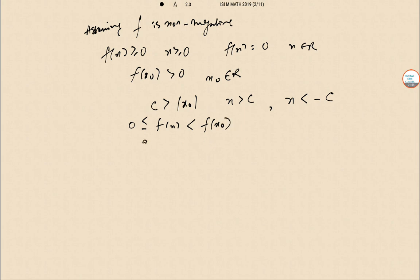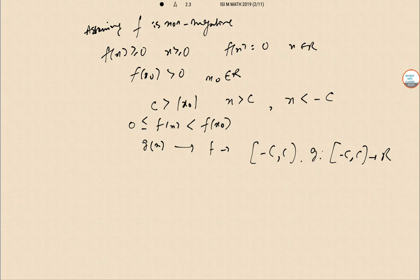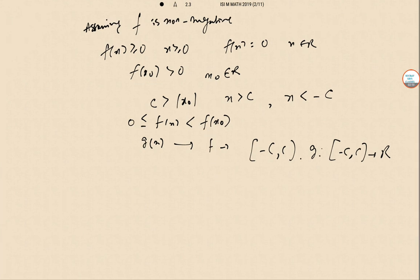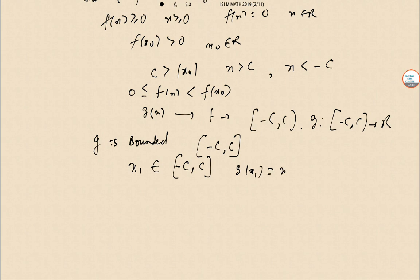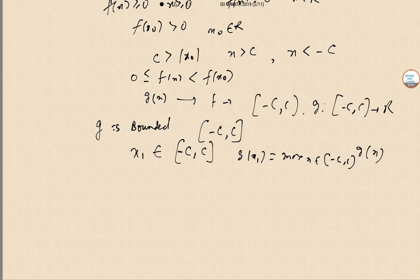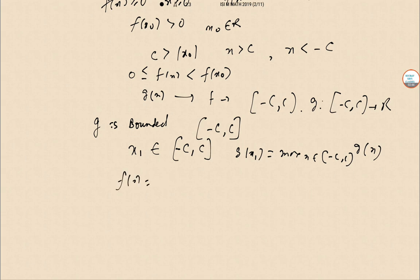Now let g(x) be the restriction of f to [−c, c]. So g: [−c, c] → R is a continuous function on a compact interval, hence g is bounded and attains its maximum value on this interval. That is, there exists x₁ in [−c, c] such that g(x₁) = max over x in [−c, c] of g(x). So we verify that f attains its maximal value: for x in [−c, c], f(x) = g(x) ≤ g(x₁) = f(x₁).